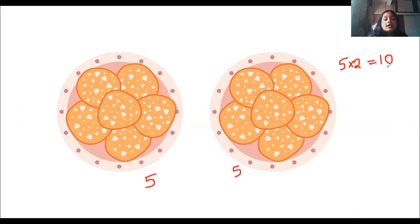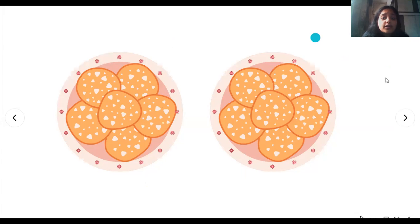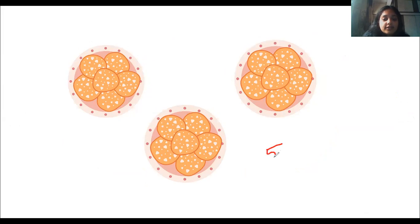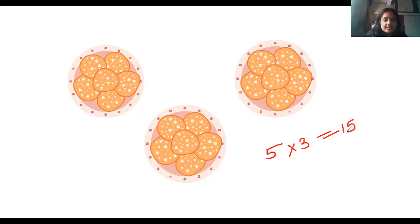Now I was wondering — ten biscuits for today and tomorrow, what about the day after tomorrow? My mama again gave me another plate of biscuits. My mama is very nice, very generous. So I have five biscuits for three days, which is a total of 15 biscuits. 15 biscuits in totality.